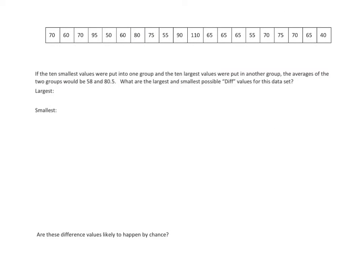Okay, so let's go back to those 20 speeds. If the 10 smallest values were put into one group and the largest 10 values were put into another, the average of the two groups would be 58 and 80.5. What are the largest and smallest possible diff values for this data? So remember, a diff value is the difference between the two means. So let's think about this. If I wanted to calculate the largest values, okay, that means I put all the large numbers in one group together.